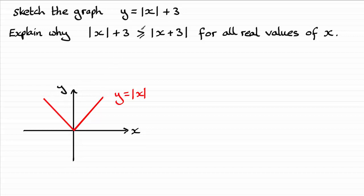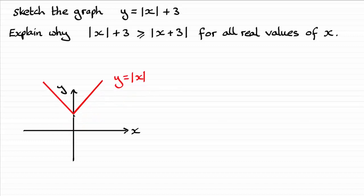When it comes to adding three, we just translate the graph — because we're adding three to the y value, we just translate it upwards. So you're going to get basically this happening: the graph moves upwards three more units, and what we end up with is the graph of y equals the mod of x plus 3. This point on the y-axis is 3.